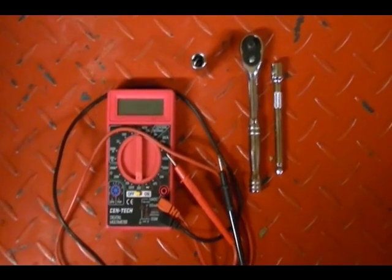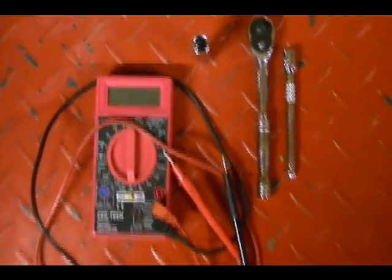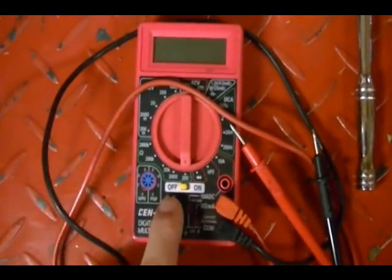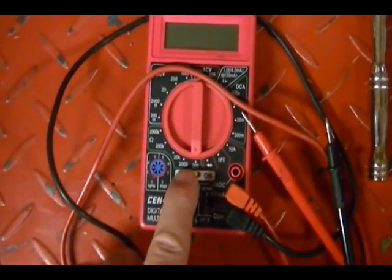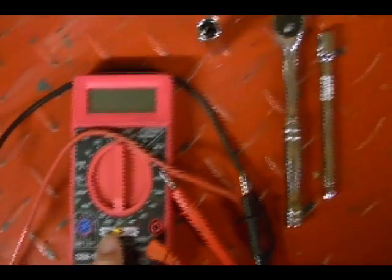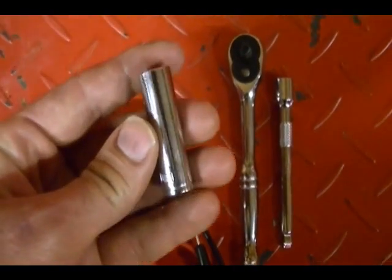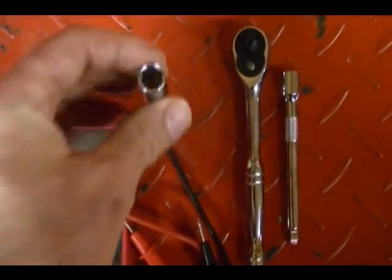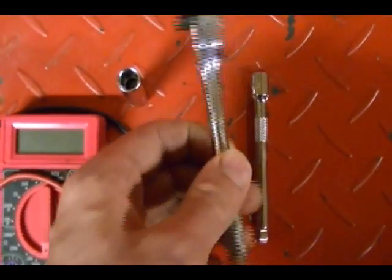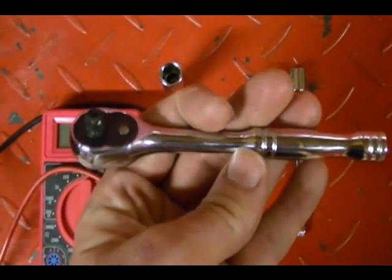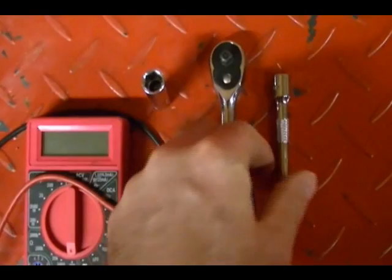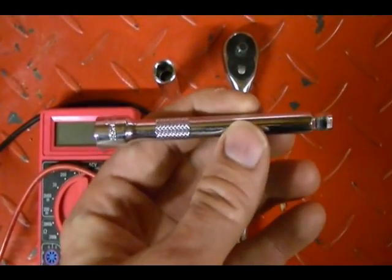These are the tools I will be using to check the kill switch. This is a Syntec digital multimeter. I will be using the ohm function set to 200 to check the switch for continuity. This is a six point deep socket 10 millimeter, Pittsburgh brand. This is a Pittsburgh quarter inch drive ratchet, and this is a Pittsburgh four inch quarter inch extension.